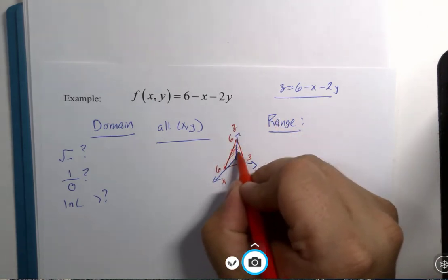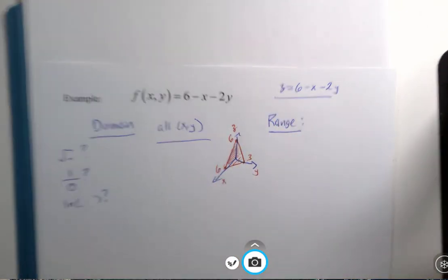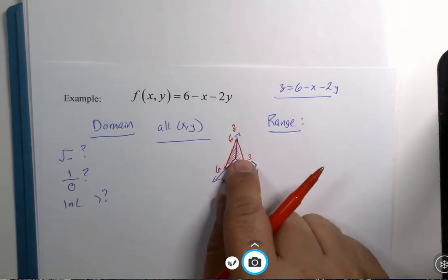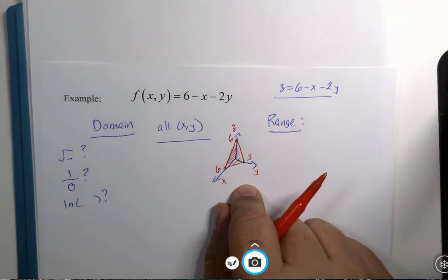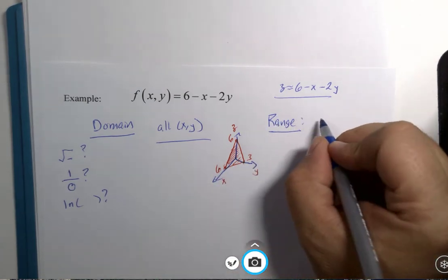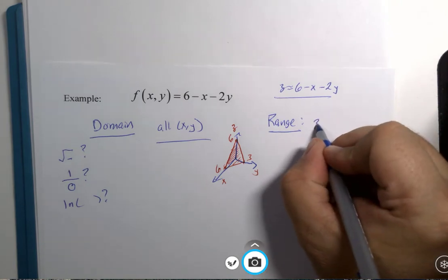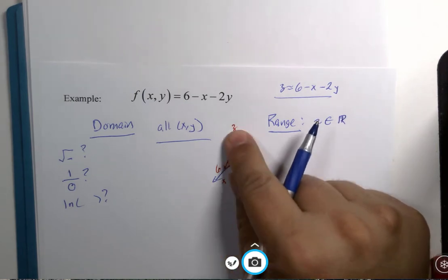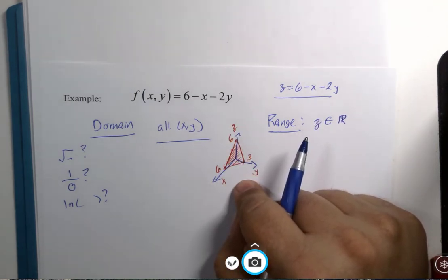Remember, this triangle is just part of the plane. It goes up in the z direction forever, and it goes down in the z direction forever. My students, the range, z could be any real number you want it to be. It goes in the z direction both ways forever. It never stops.